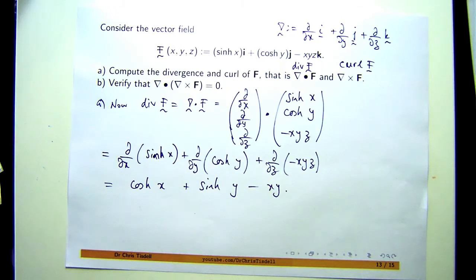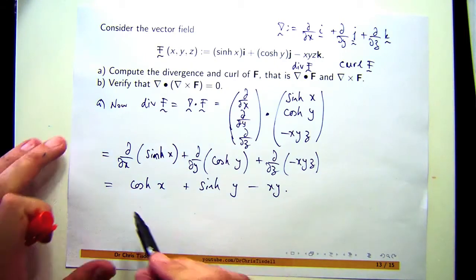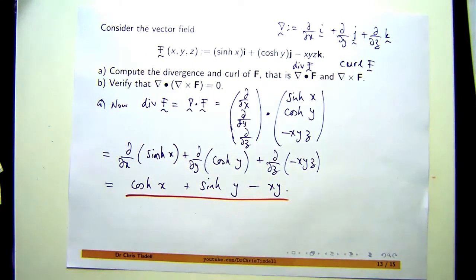Now the important thing here is if you look at the form of your answer, it's not a vector, it's just a function. If you plug in values into that, you'll get a number. Whenever you take the divergence of something, you won't get a vector. That's the important thing.